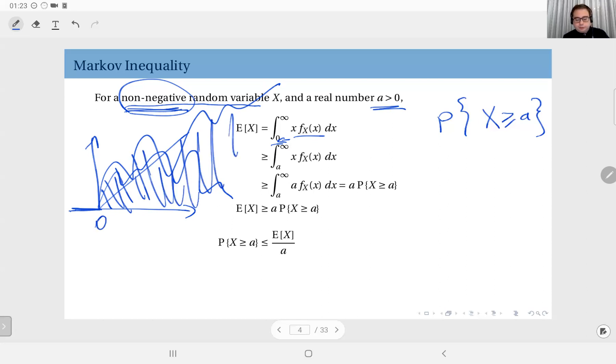Starting from zero, if you compute this you get the expected value. But if you shift the lower limit to a, that means you are sacrificing some area here. Therefore, the expected value of the random variable X is greater than or equal to this integral starting not from zero but from a.